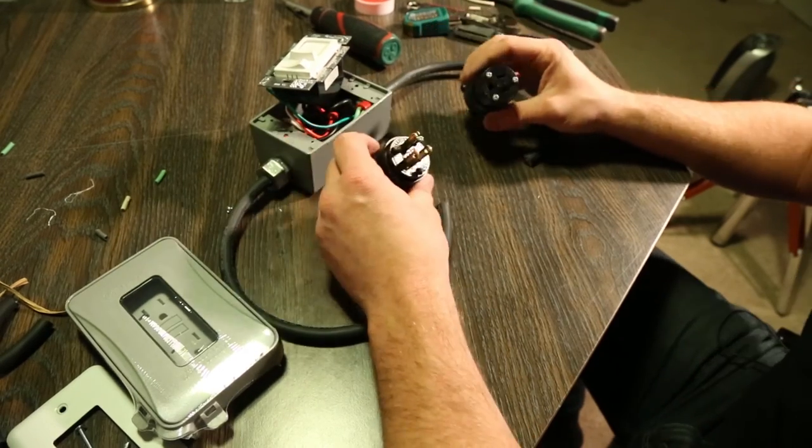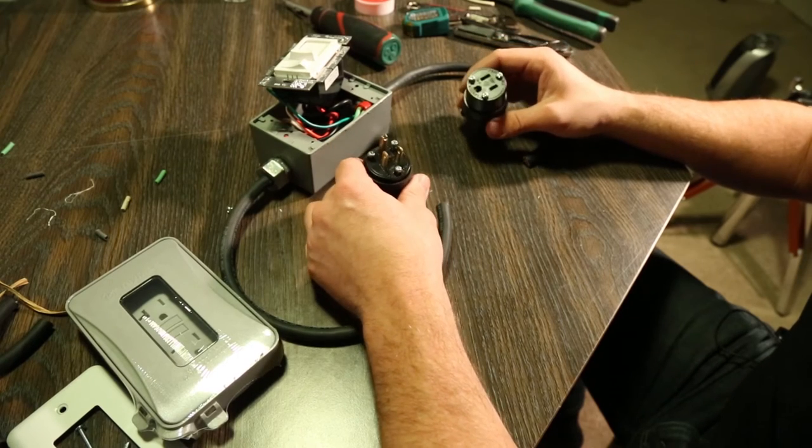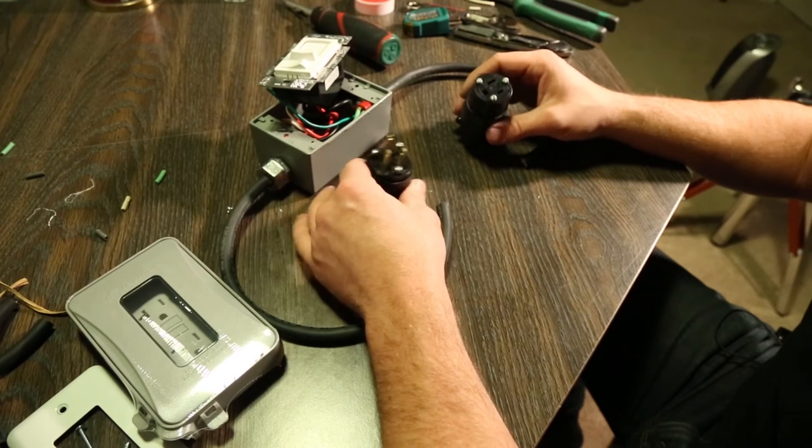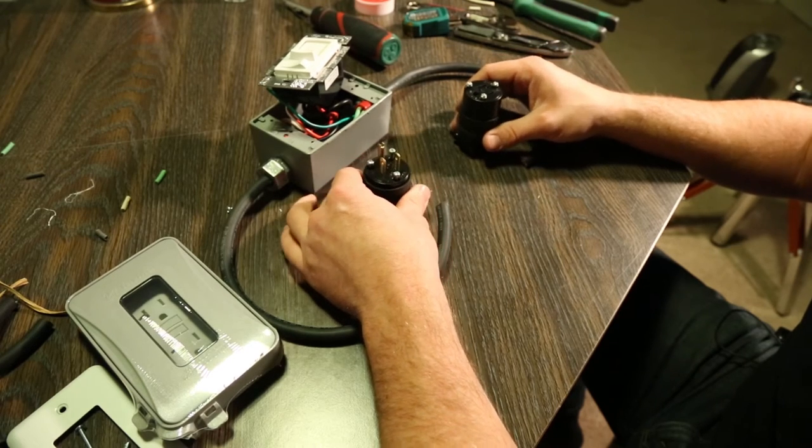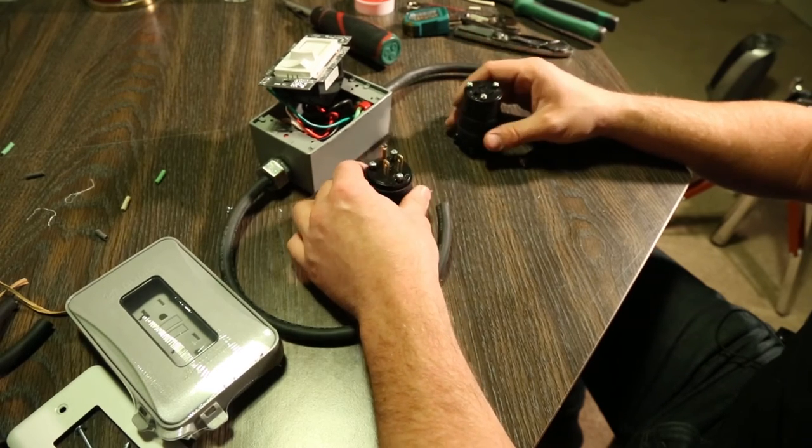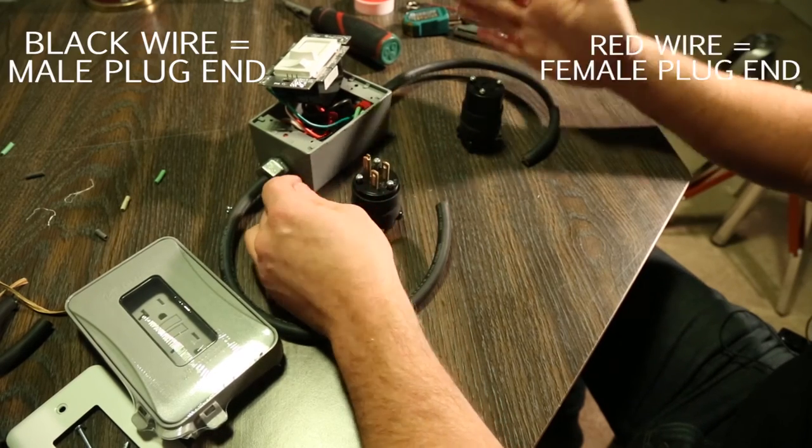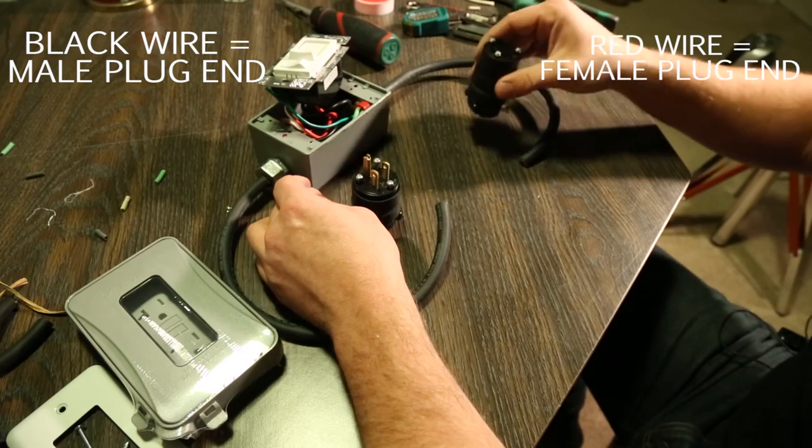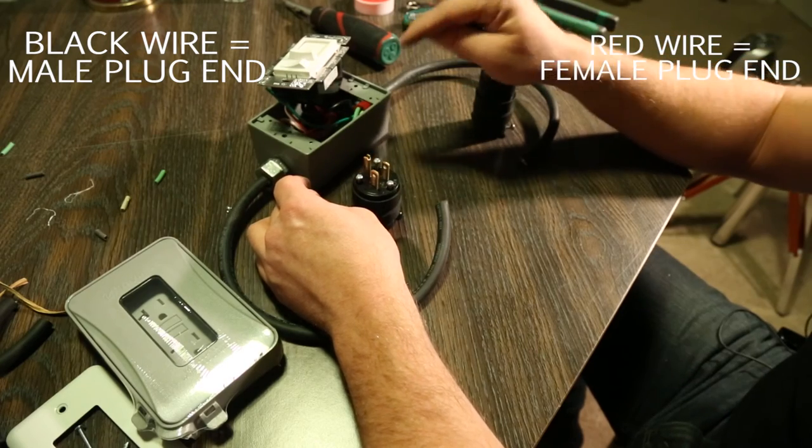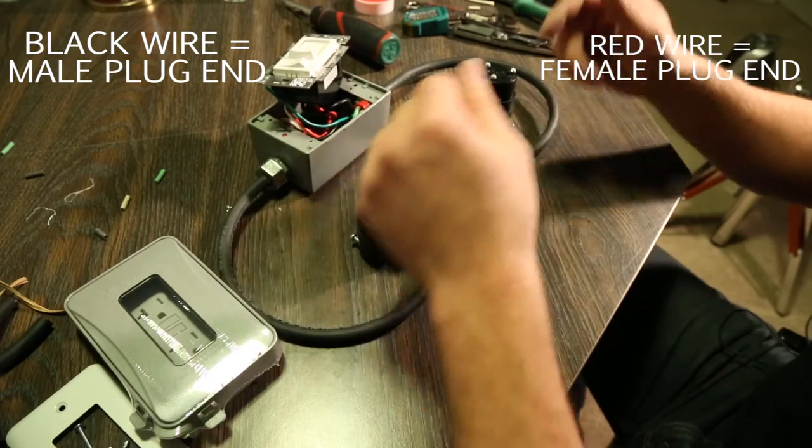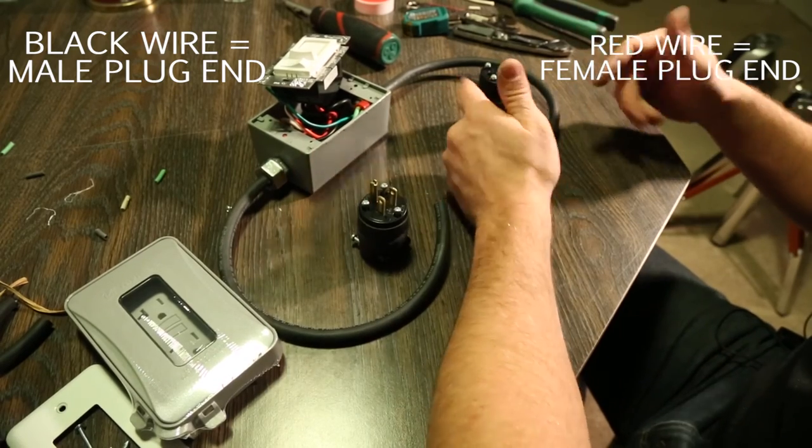Now, before we go any further, we're going to connect these ends. And I'm not really going to go into detail as to how to do this, but basically I've got a tutorial where it'll teach you how to make stingers and it's the same process. The only difference is that obviously we've identified that this side is going to be my female end because of that red wire that's in there. And then this side is going to be my male side. So we'll go ahead and wire that now.